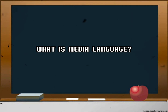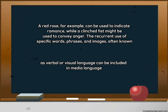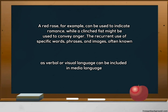What is a media language example? A red rose, for example, can be used to indicate romance, while a clenched fist might be used to convey anger. The recurrent use of specific words, phrases, and images, often known as verbal or visual language, can be included in media languages.